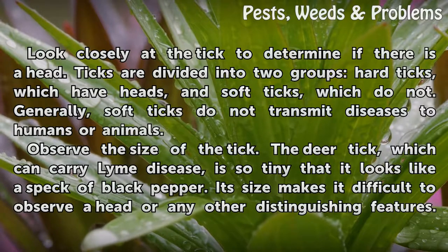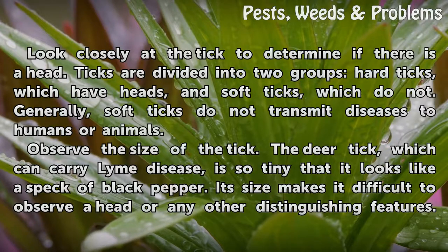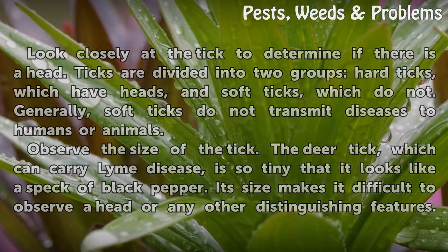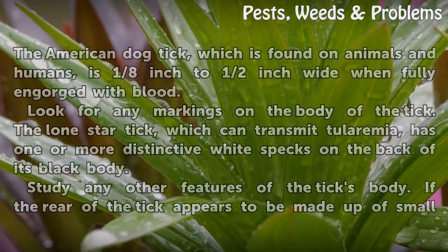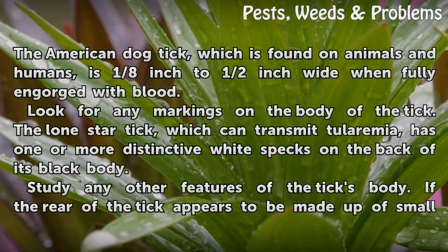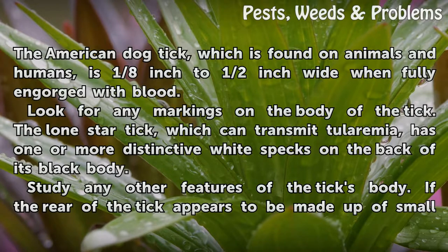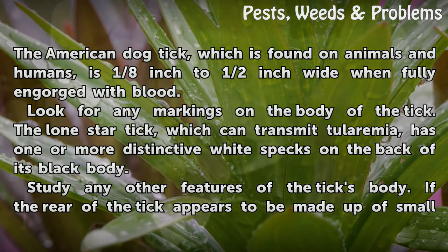Observe the size of the tick. The deer tick, which can carry Lyme disease, is so tiny that it looks like a speck of black pepper. Its size makes it difficult to observe a head or any other distinguishing features. The American dog tick, which is found on animals and humans, is 1/8 inch to 1/2 inch wide when fully engorged with blood.